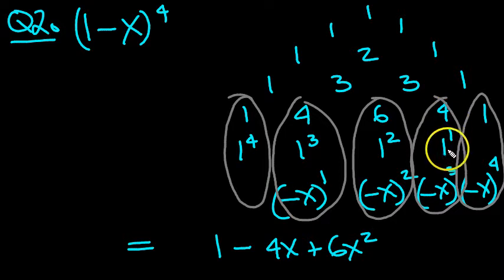The next one will be 4 lots of 1, which is 4. Minus cubed will be a minus, and it'll be minus 4x cubed. And then the last one. Minus times a minus times a minus times a minus is a plus. Times 1, so it's just plus x to the 4, isn't it?